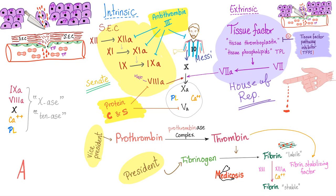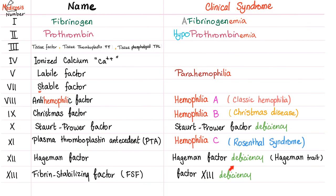There is a mnemonic: hemophilia A, the problem is factor 8; B, factor 9; and C — don't say 10, say 11. Factor 8 is the anti-hemophilia factor, and its deficiency causes hemophilia A or classic hemophilia. Factor 9 is the Christmas factor, causing hemophilia B or Christmas disease. Hemophilia C involves factor 11 — plasma thromboplastin antecedent — and is known as Rosenthal syndrome.